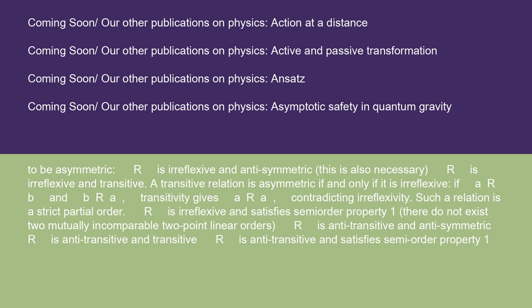R is irreflexive and satisfies semi-order property 1 (there do not exist two mutually incomparable two-point linear orders). R is antitransitive and antisymmetric. R is antitransitive and transitive. R is antitransitive and satisfies semi-order property 1.